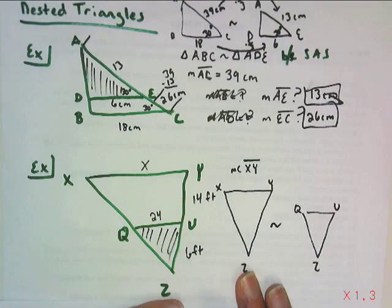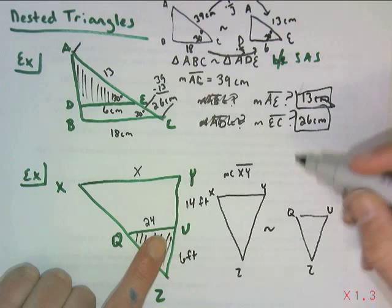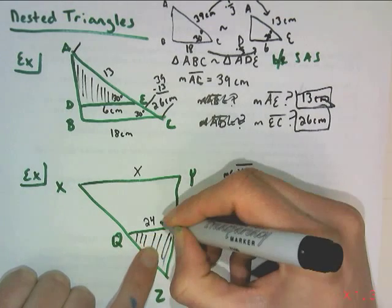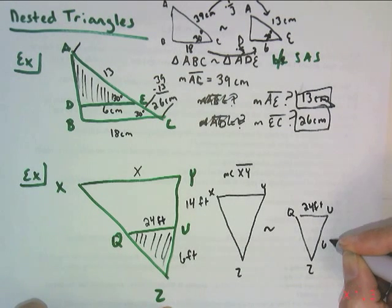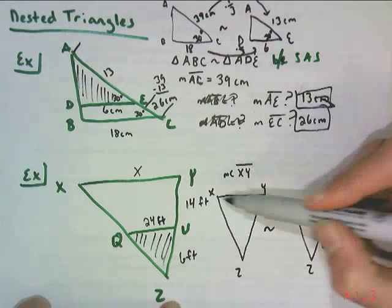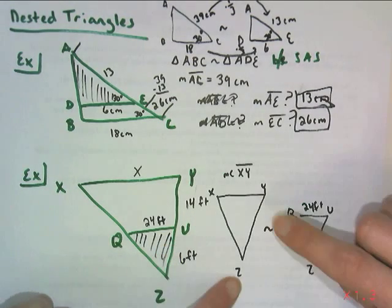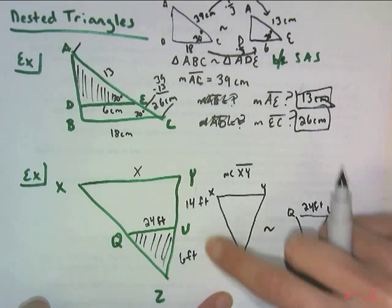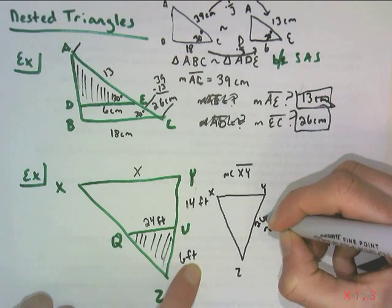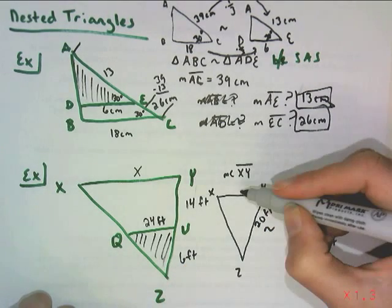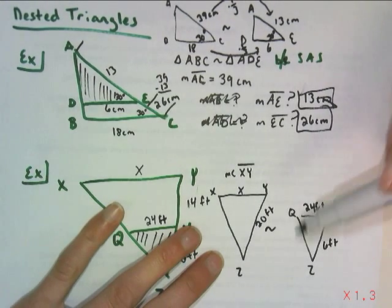Now we want to put some numbers on. We know that QU is 24 feet. We know that UZ is 6 feet. And then we know that from Y to U is 14. And therefore, from Y to Z would be the sum of 14 and 6. So all the way across, this thing is 20 feet. And we're asked to find this. We have 3 out of the 4. So we could set up a proportion.